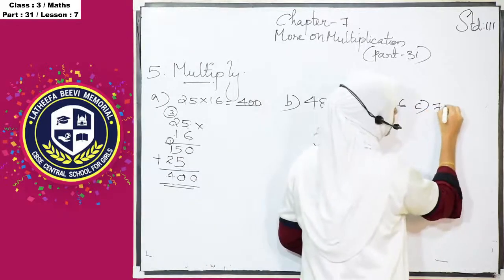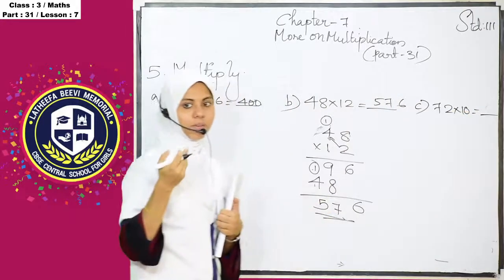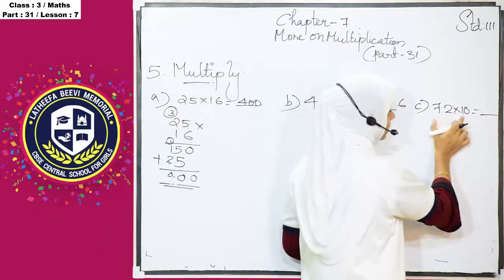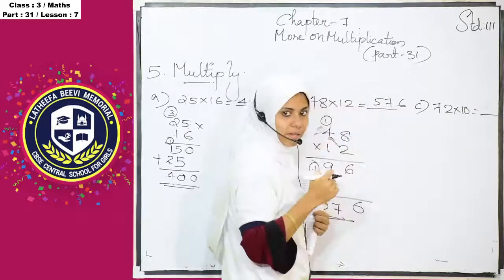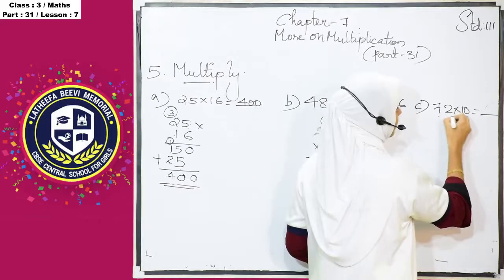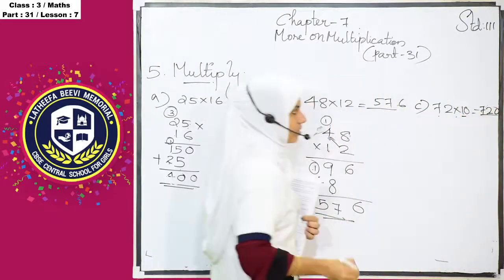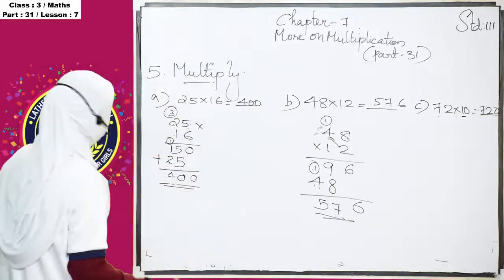72 into 10, 72 into 10, where are 10 zeros? We multiply that to 0. But 72 into 1 is 72, then add 1, 0 also. So, 720 is the answer. Next question.